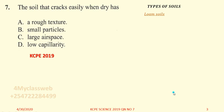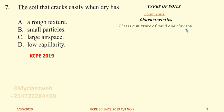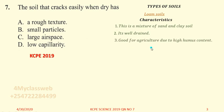Now loam soil — its characteristics are: number one, it is a mixture of sand and clay soil. This means the particles are in between sand and clay soil — not very large and not very small. This soil is well drained, meaning it does not lose water very fast and it does not retain too much water.